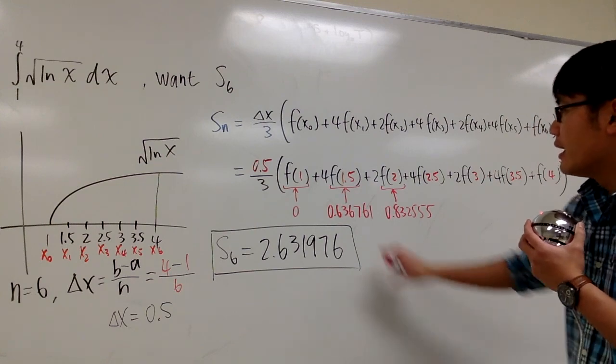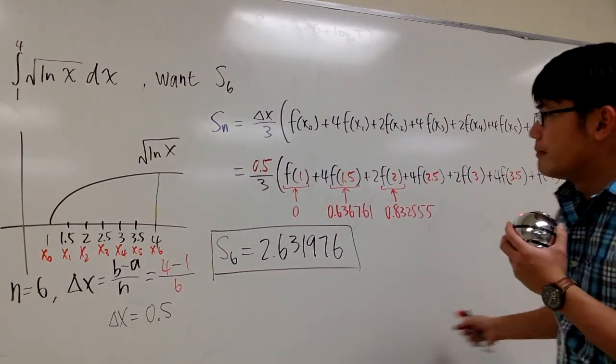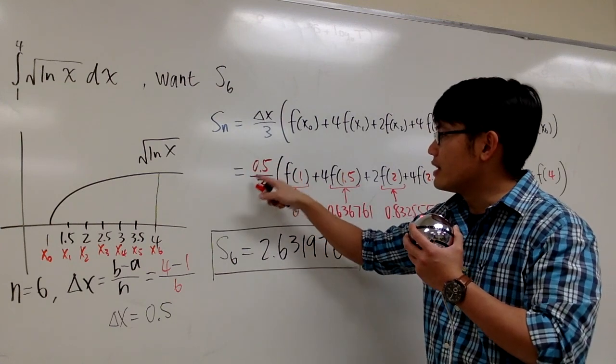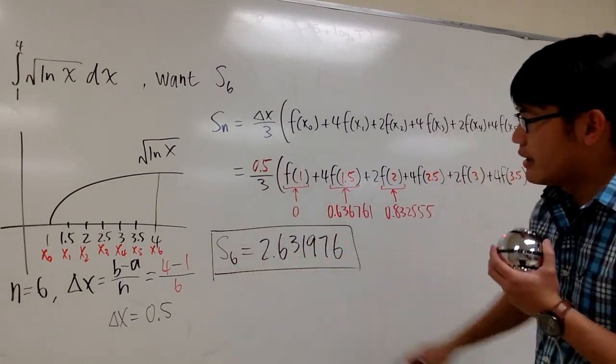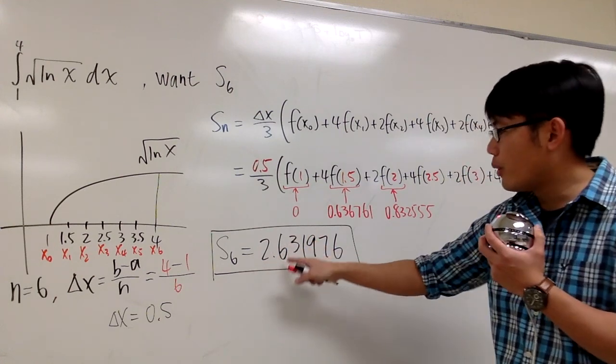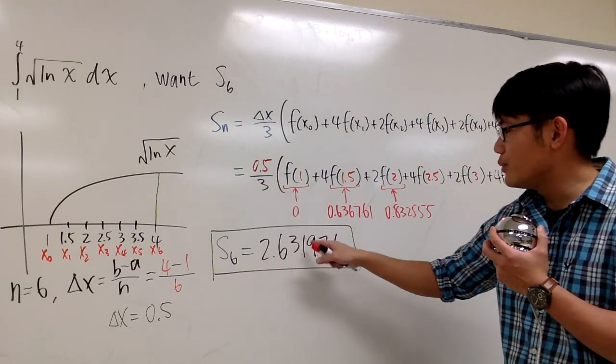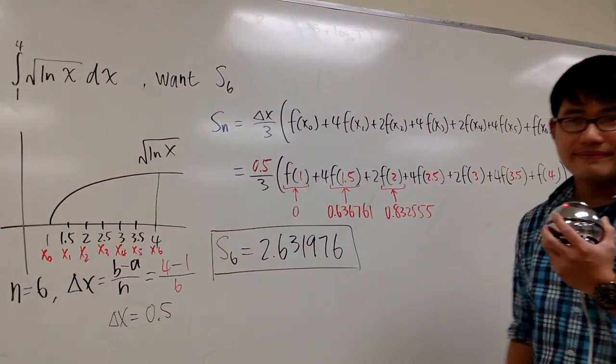Add this up. And then at the end, you multiply by 0.5 divided by 3. This is the answer that you get. S6 equals 2.631976.